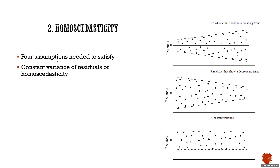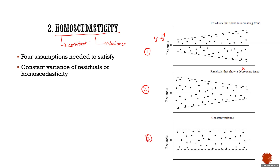The second assumption is homoscedasticity. 'Homo' means constant and 'scedasticity' is a synonym of variance — so it means constant variance. You expect a constant variance in the residuals. The residuals are Y minus Y-hat, plotted against X. In cases one and two, there is a constant increase or decrease in variance. In case three, the variance is not changing — that is homoscedastic. Only in homoscedastic cases should you apply linear regression.